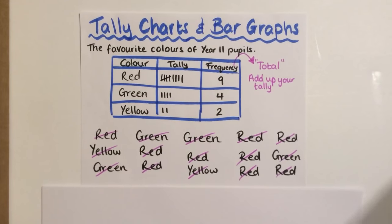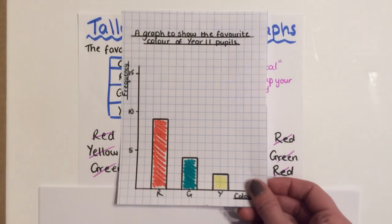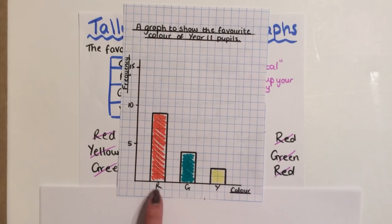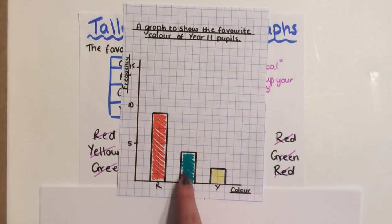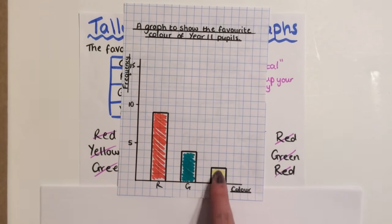This data can be presented on a bar graph like so. So I've got 9 for red, 4 for green, 2 for yellow.